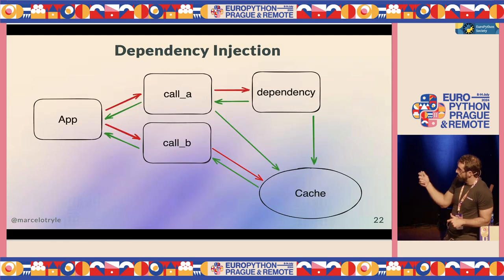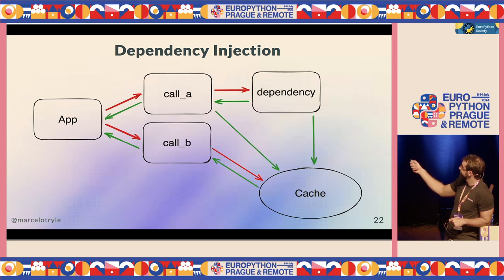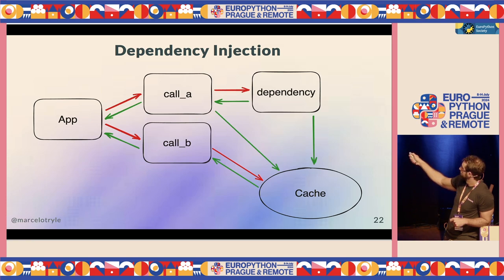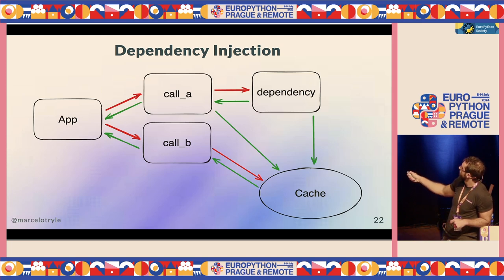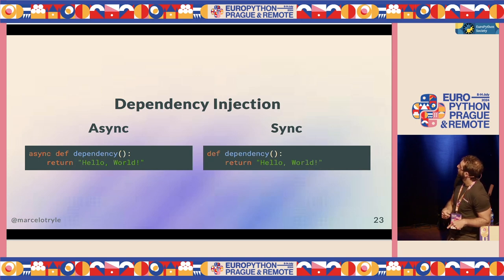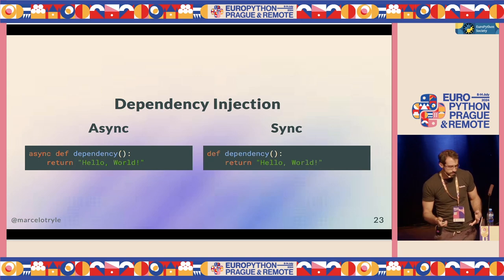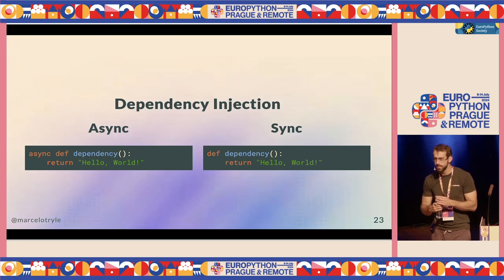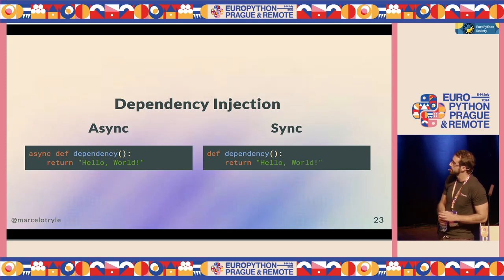So the app calls A, and then it calls dependency. The dependency stores the result — the hash of the function is stored in the cache. Then when B is called, it checks the cache. If it's already there, it uses the cached result. This is not written down anywhere obvious but is important to understand.